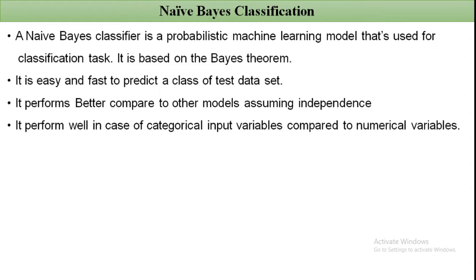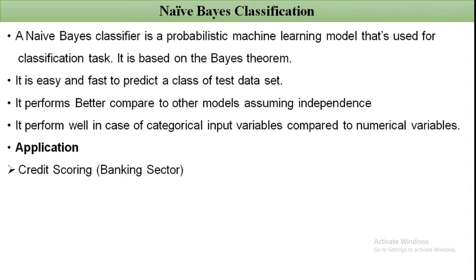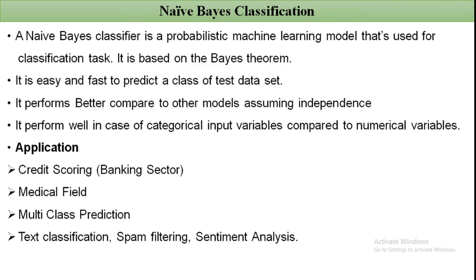Applications of Naive Bayes classification include credit scoring in the banking sector and the medical field. It is also used in multi-class prediction, text classification, spam filtering, sentiment analysis, and recommendation systems.